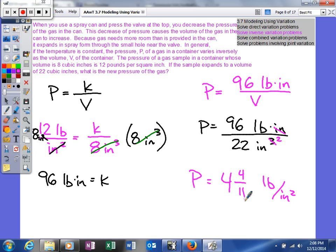And it should make sense, because there's an inverse variation that if your pressure increases, then if your volume increases, the pressure decreases. That's what it means to have a nice little inverse variation. So as you can see, our volume increased, where our pressure was 12, now it's 4 and 4 elevenths. So just an example of inverse variation.